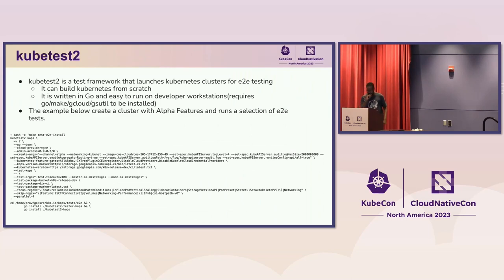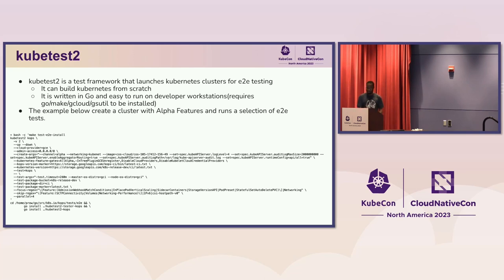kubetest2 is a test framework — a program that allows us to launch a Kubernetes cluster. On this screen you can see an invocation of a test where we're using kOps to launch a cluster on Google Cloud with a particular configuration. The configuration shown has kubetest2 with CNI, and this particular test run is testing alpha features. At the bottom you can see that we are focusing on particular test features and skipping a lot of them.